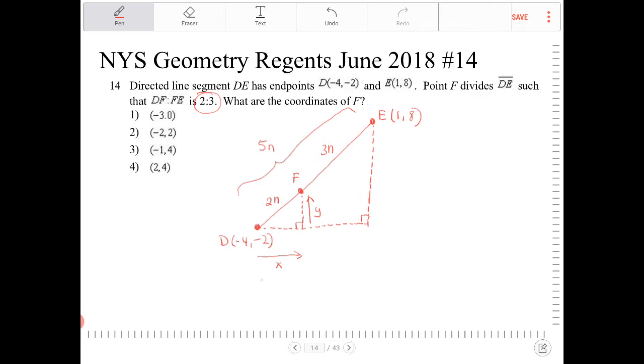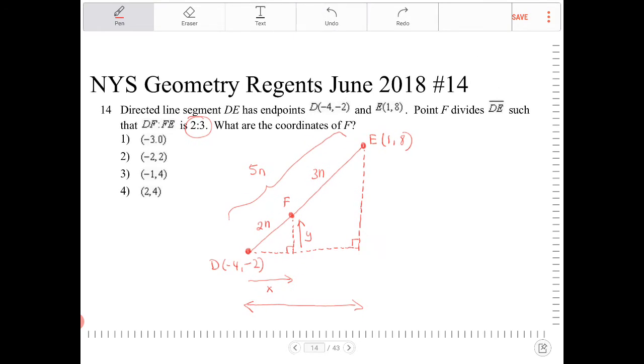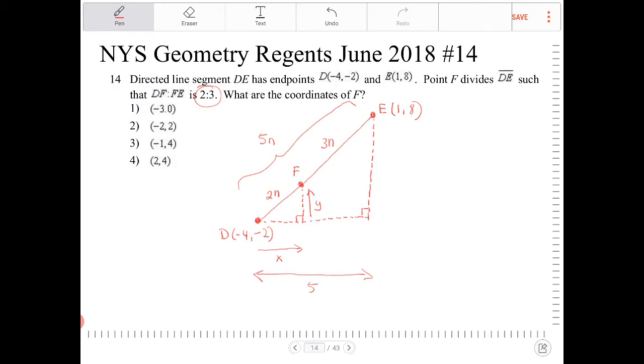What I do know is, to go from D, the horizontal component, to go from D to E, this segment here is going to be 5, because I'm taking 1 minus negative 4. So that segment is going to be 5. The vertical component will be 8 minus negative 2, which is 10.